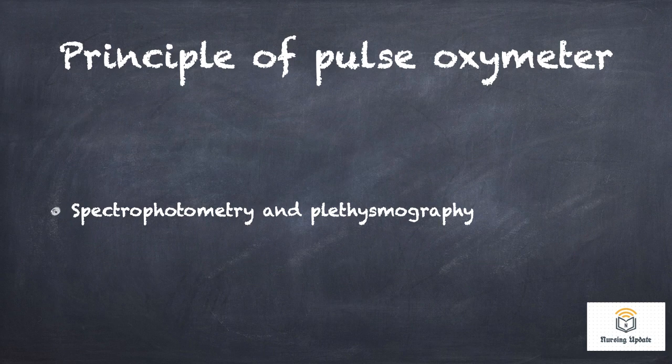Principles of pulse oximetry: spectrophotometry and photoplethysmography. Oxygenated hemoglobin absorbs more red color waveforms, while non-oxygenated hemoglobin absorbs less. That is the principle behind pulse oximetry.